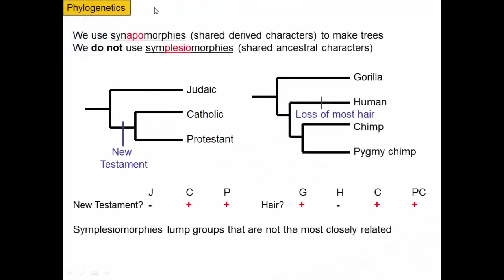Now that we have a little understanding about what phylogenies represent, how do we come up with these phylogenies? How do we discover them? When we're making a phylogeny, or trying to discover it, we use things called synapomorphies — shared derived characters — to make these trees.